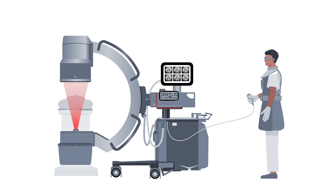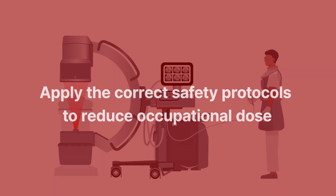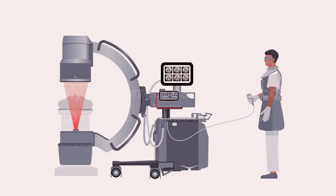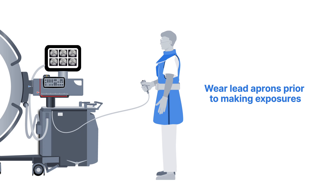Although C-arms allow for greater flexibility and mobility, they have a higher potential for radiation exposure to hospital staff because they do not have permanent protective fixtures. Operators need to take great care during procedures to apply the correct safety protocols to reduce occupational dose — for example, making sure to ask everyone in the room if they have lead aprons on prior to making any exposures.